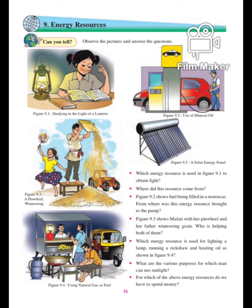Just see page number 51, children. On page number 51, there are different pictures given. You have to observe the pictures and answer the questions. In the first picture, you can see a girl reading a book with the help of a lantern. Then, where did this resource come from?